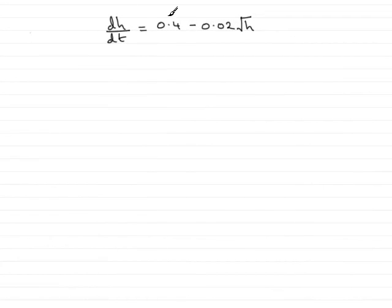Now I've got the equation then, dh by dt equals 0.4 minus 0.02 root h.